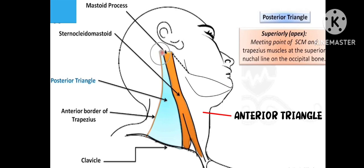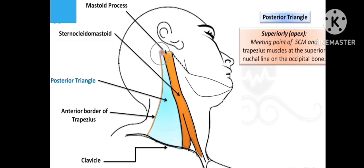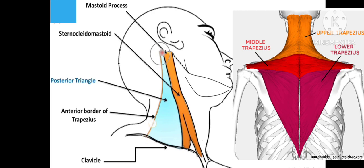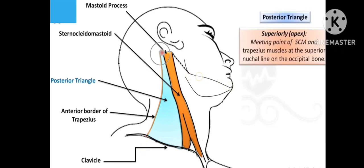This muscle is the sternocleidomastoid muscle. Anterior is the median plane, posterior is the anterior border of trapezius, superior is the body of the mandible and a line joining the angle of the mandible to the mastoid process, and inferior is the clavicle. In the quadrangular area, you can see two triangles — the anterior triangle and the posterior triangle.